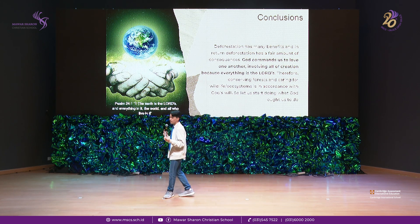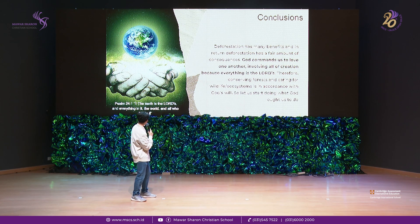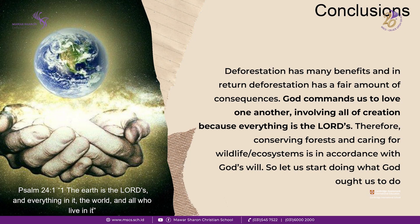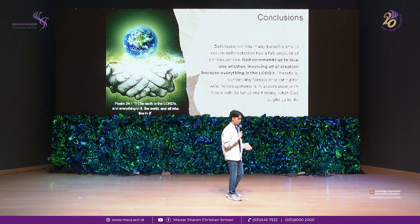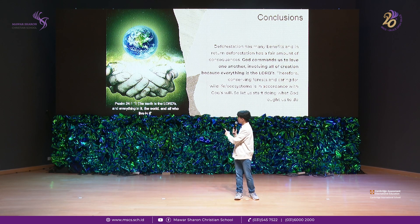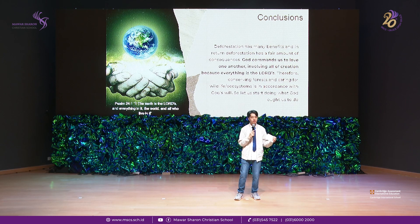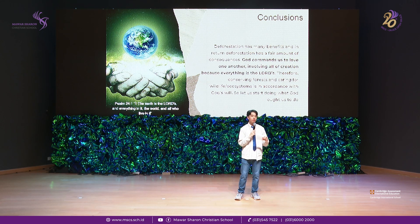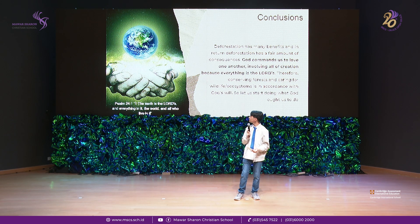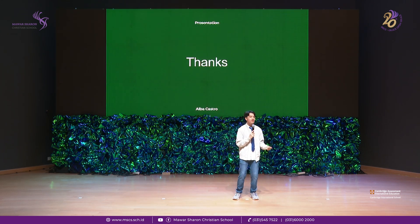For my conclusion, I'll read Psalms 24 verse 1: 'The earth is the Lord's and everything in it, the world and all who live in it.' Everything on this earth is a gift from God, and we as humans are trusted by God to take care of what He has gifted us. That is why what I've learned is that we should be more responsible and grateful for the things God has gifted us, and we should start doing God's will by protecting His creations.